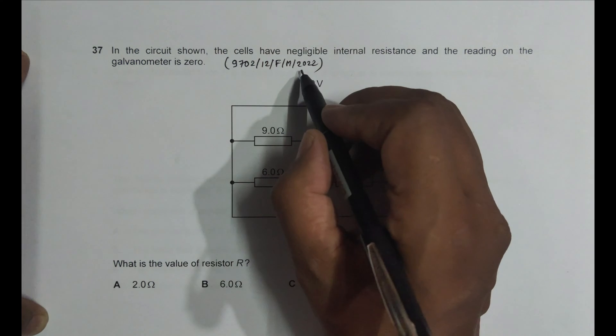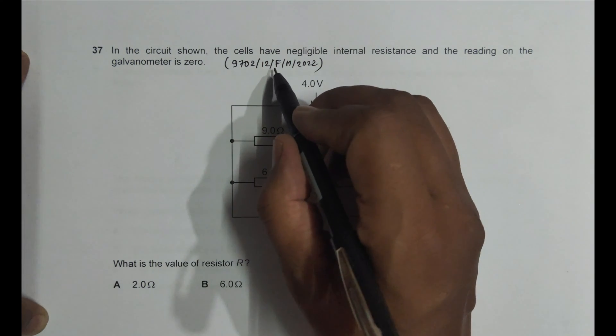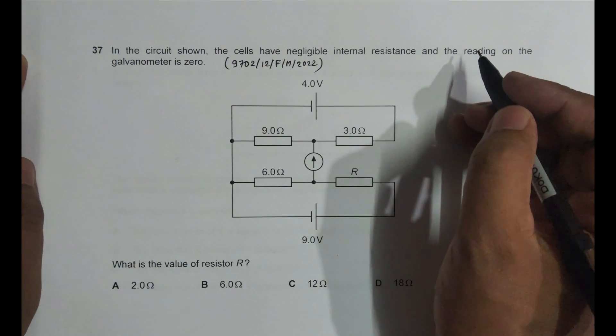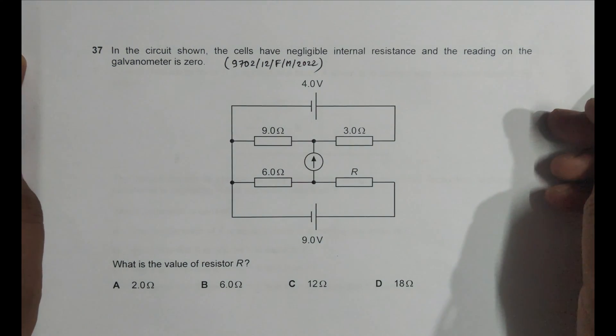Let's start. This question is from 2022 February-March paper 1-2 and the question number is 37. As you can see from the diagram, the question is from the chapter current electricity.